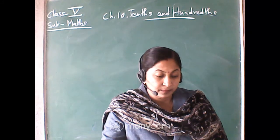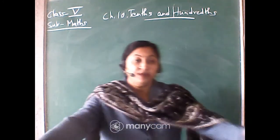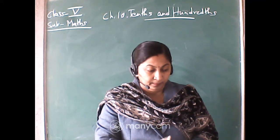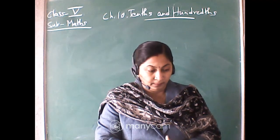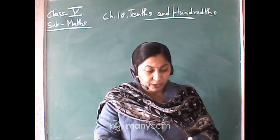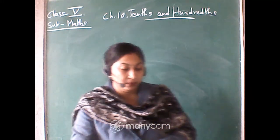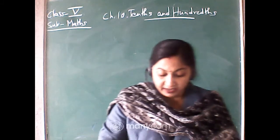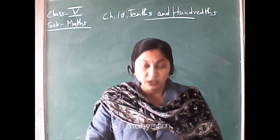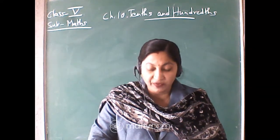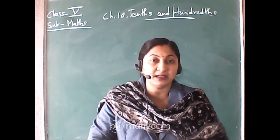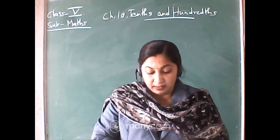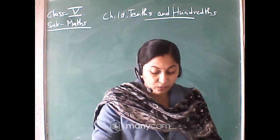Now quickly see the length of line C and D. A student is writing 3.2 — and remember, you must write CM for centimeters, not just C. Exactly, the measurement of line C and D is 3.2 centimeters. So, the measurement of line A and B is 4.6 centimeters, and the measurement of line C and D is 3.2 centimeters. Those who have not written, kindly write it down. Now turn the page — come to page number 138.